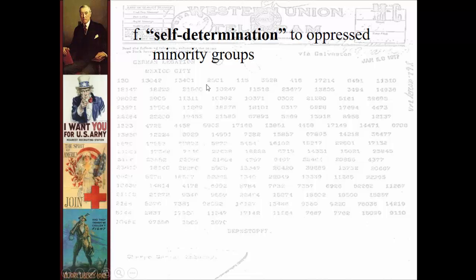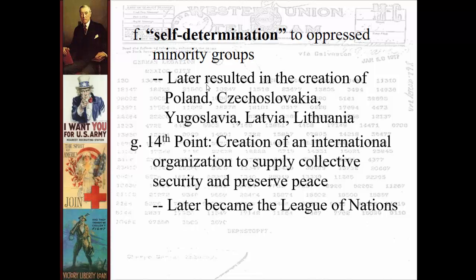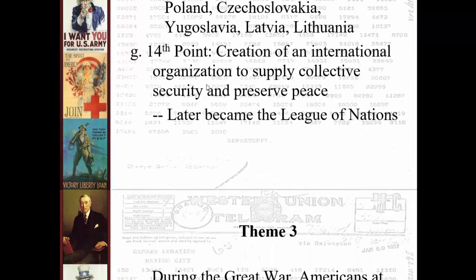Wilson promised self-determination to groups all over Europe — Poles, Czechs, Yugoslavians, Latvians, Lithuanians — living under other empires like the Russians, Germans, or Austrians — suddenly excited about the possibility of their own homelands and a redrawn map of Europe. The big one — the 14th point, the capstone — was his desire to create an organization of countries that would work together to preserve peace in the future: the League of Nations, our first major international organization. It would ultimately be doomed by the fact that the US never joins, despite our own president creating it.